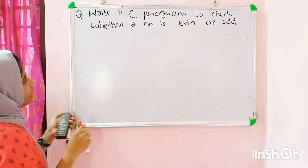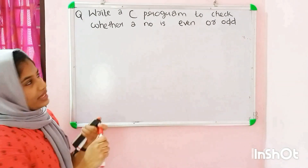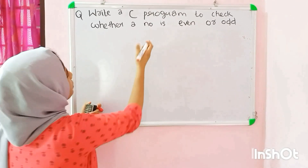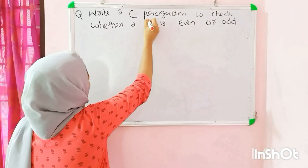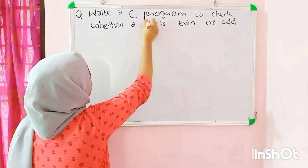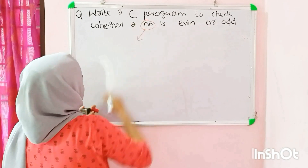If you want to write a C program to check whether the number is even or odd, now let's talk about the number. That number is type code.